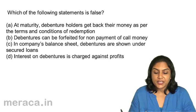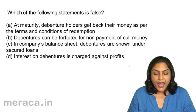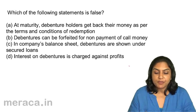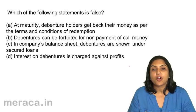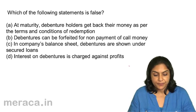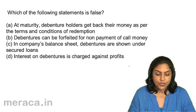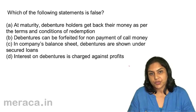Next. Which of the following statements is false? A. At maturity, debenture holders get back their money as per the terms and conditions of redemption. B. Debentures can be forfeited for non-payment of call money. C. In a company's balance sheet, debentures are shown under secured loans. D. Interest on debentures is charged against profits.